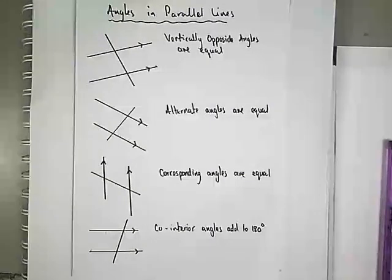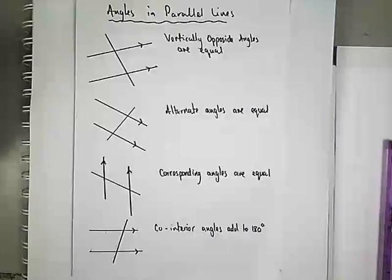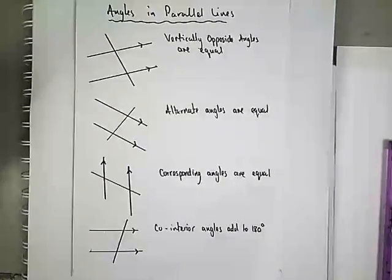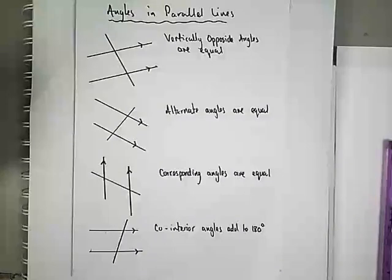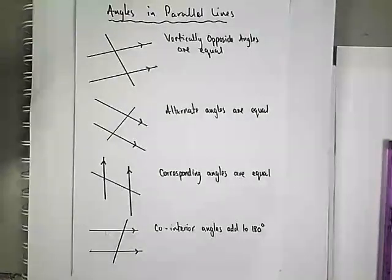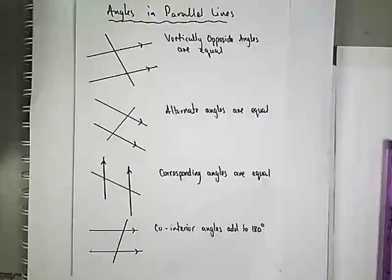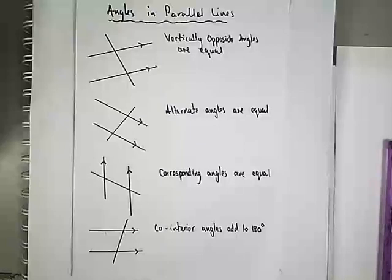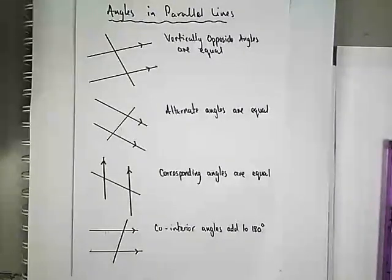Hi guys, today we're going to look at angles in parallel lines. This is probably quite a tricky topic, so do your best to remember these reasons and how to work out missing angles given a certain angle. There are four rules with angles in parallel lines, and there are certain things that happen which actually help us to work out those missing angles.